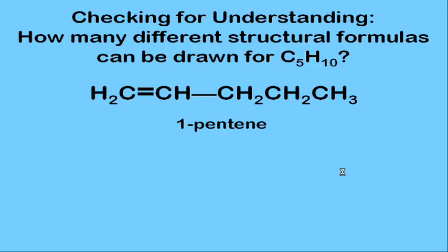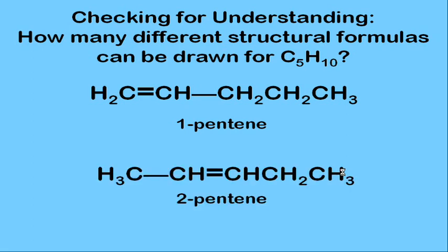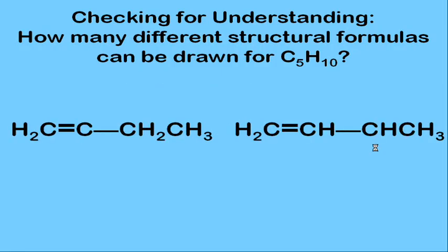Now let's look at C₅H₁₀. Starting with double bonds: five carbons in a row with the double bond on the end gives 1-pentene. Putting the double bond on carbon two gives 2-pentene. There is no such thing as 3-pentene — you'd simply number the carbon chain from the other side.